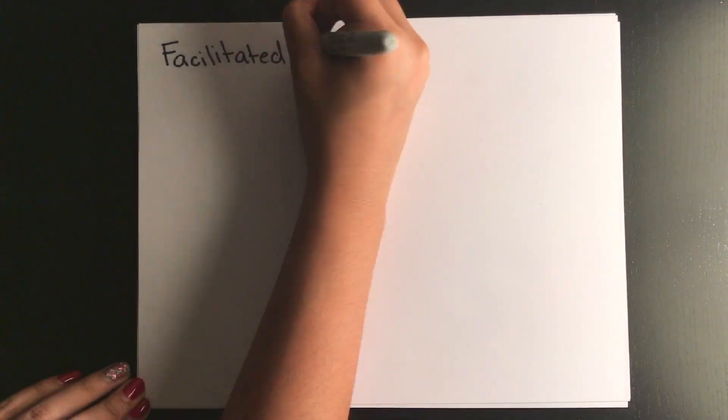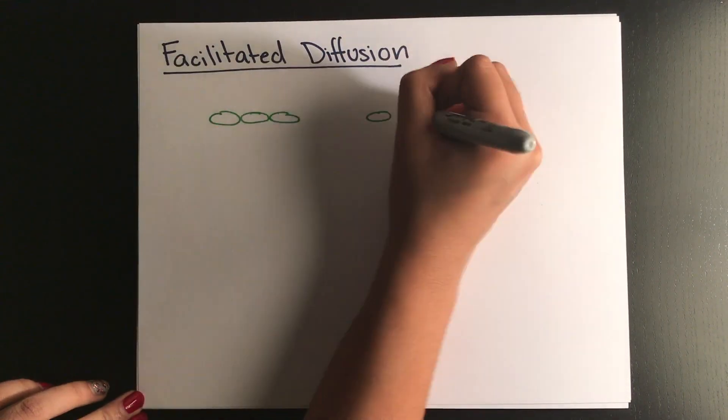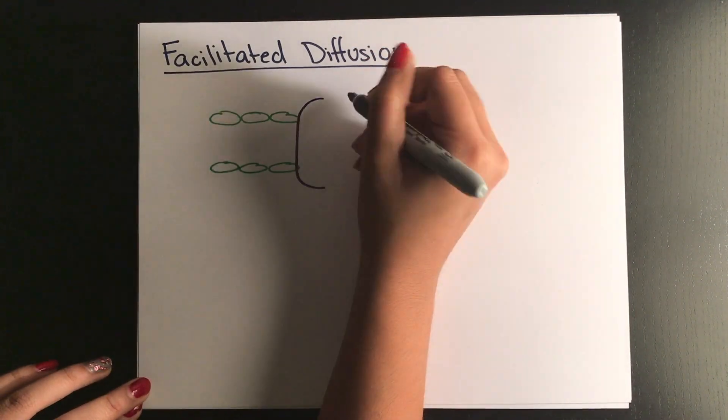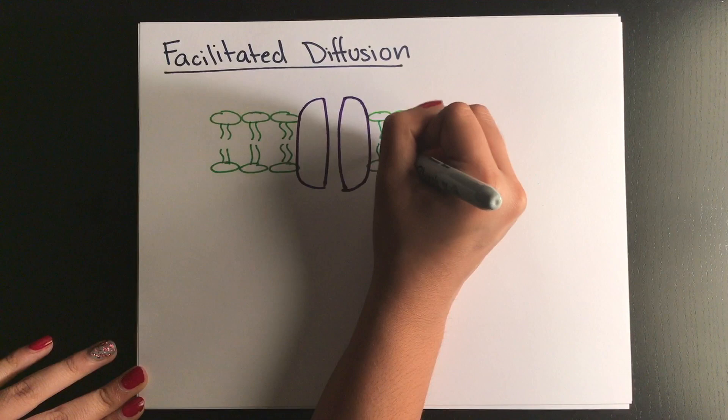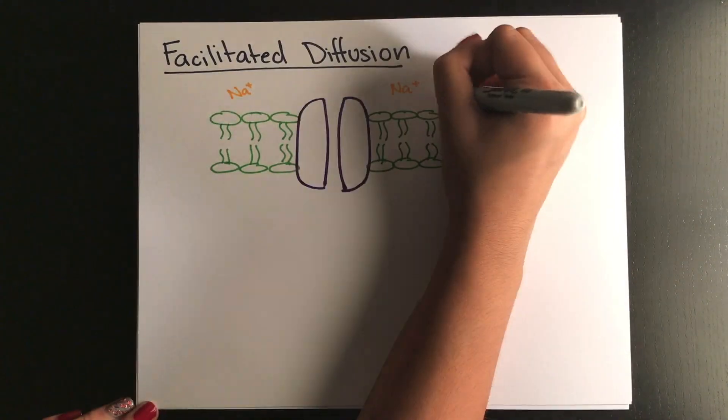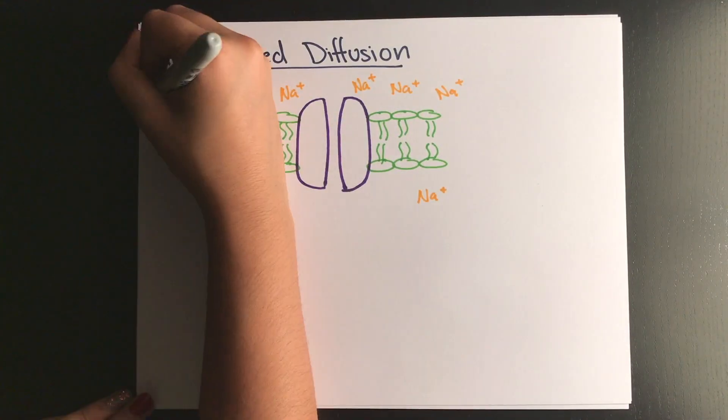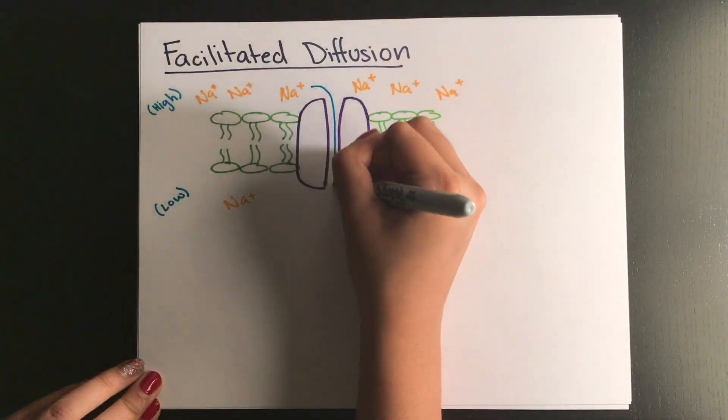Next is facilitated diffusion, which is the same concept but with hydrophilic substances that can't just cross the barrier on their own. These are helped by proteins in the membrane that form specific channels, or by proteins that bind and pull the substance through the membrane. An example of this is ions and glucose.